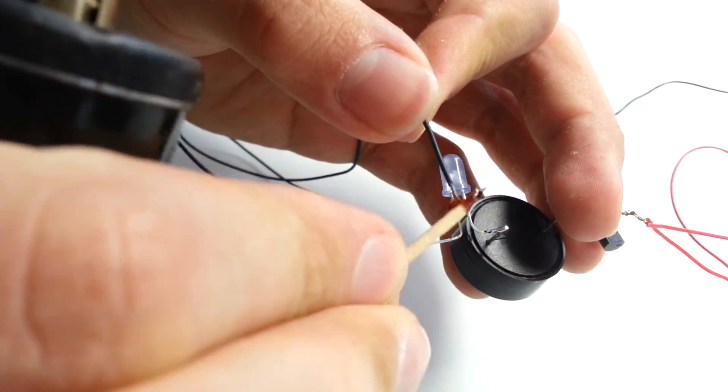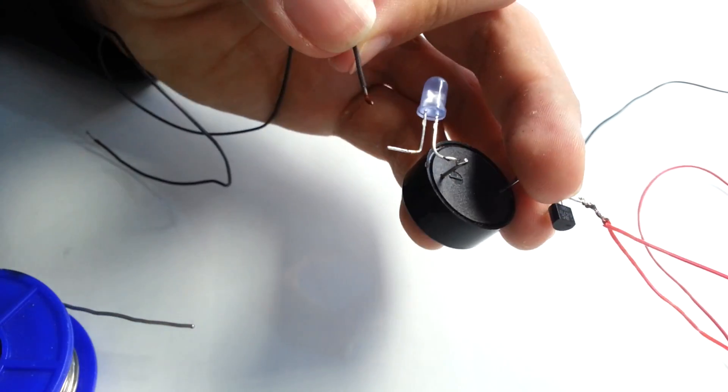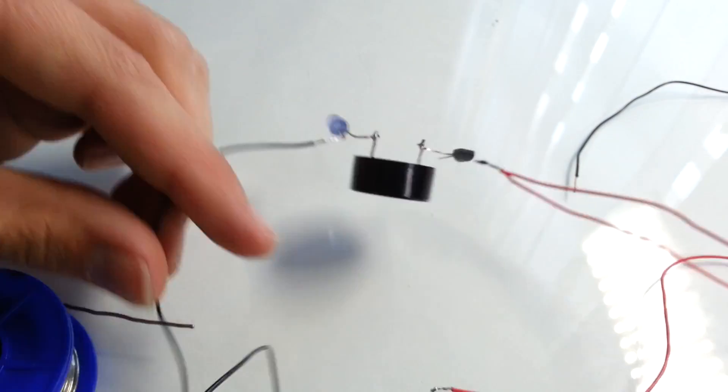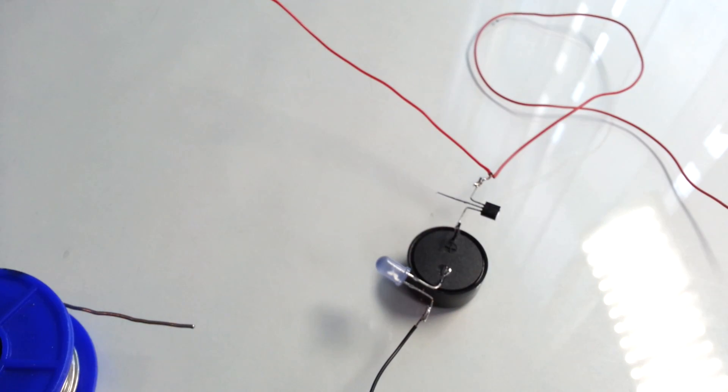Now we can solder the first black wire to the cathode lead of the LED. And the second black wire I will solder to the base lead of the transistor.